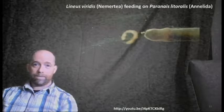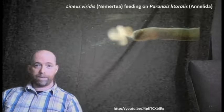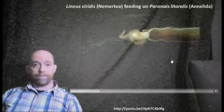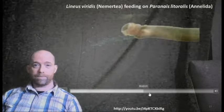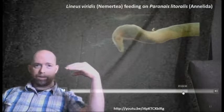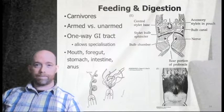Another example of a nemertean feeding on an annelid: the proboscis shoots out, hits the annelid, and then we watch it slowly consumed. Slowed-down footage shows clearly how it reaches out and strikes. It really does look like a sinister sock puppet kind of a mouth.